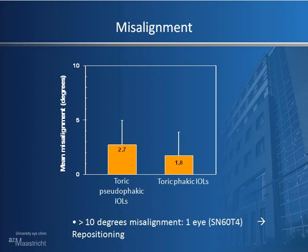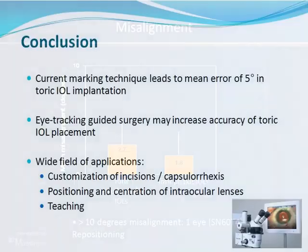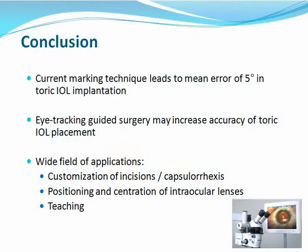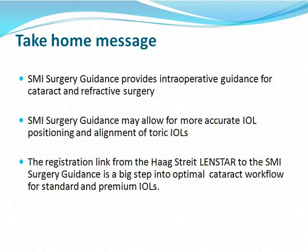We had one eye with a misalignment, but that could have been post-operative rotation because we did not measure at different time points immediately after surgery. In conclusion, current manual marking techniques show an error of around 5 degrees. Eye-tracking-guided surgery, based on first results, may increase accuracy. There is a wide field of applications: rhexis, incisions, positioning, and centration of multifocal lenses. It can be used in teaching residents for capsular rhexis, and the registration link from the LENSTAR unit to the SMI optimizes the cataract workflow because you can take all measurements using only one machine.